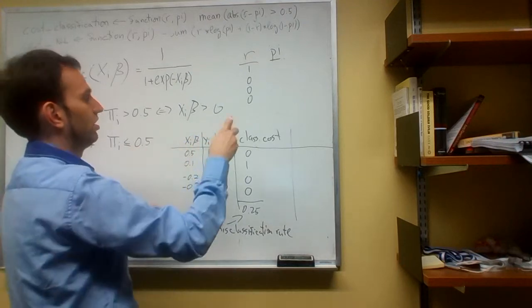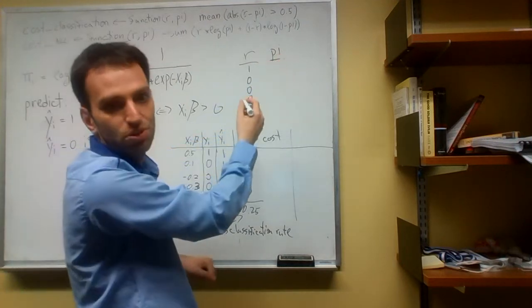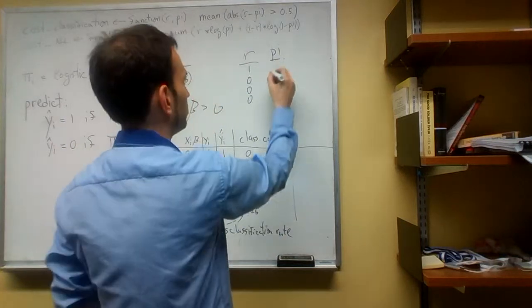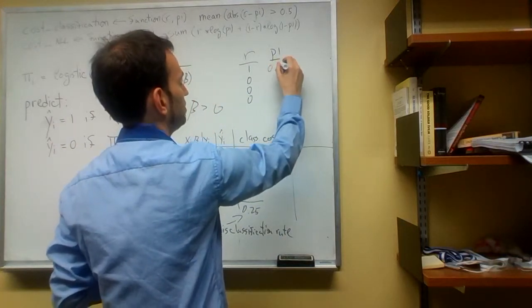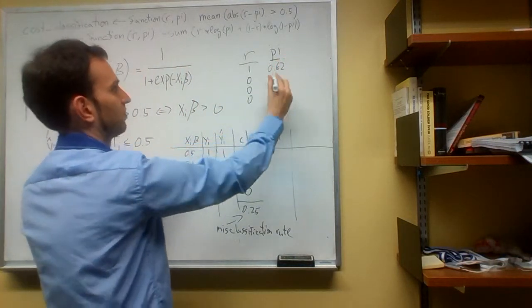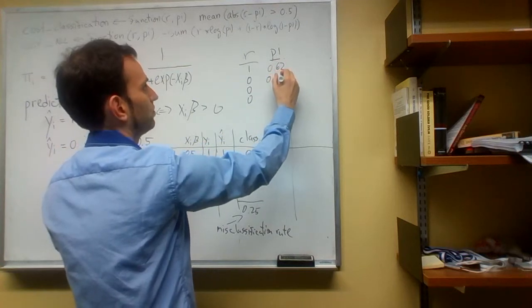So this guy is going to be the logistic of 0.5, which works out to about 0.62. This guy is the logistic of this, which is 0.52.